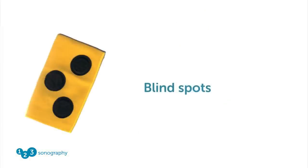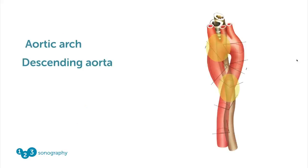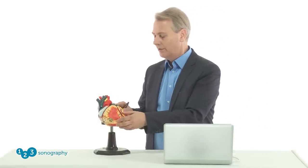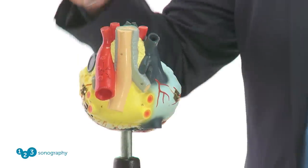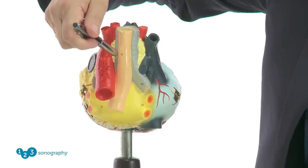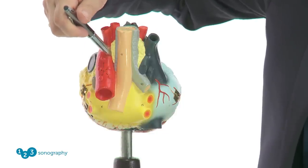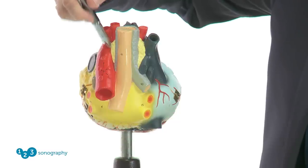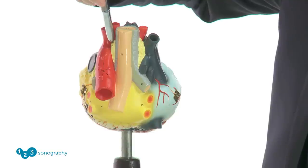TEE also has a few disadvantages — certain blind spots you have to know. One is a problem with the aorta: there is one area where it's difficult to see the descending aorta in the middle part of the chest. The other is the cranial portion of the ascending aorta and the aortic arch. The reason is that we have the bronchial tree lying between the esophagus and the ascending aorta and aortic arch, making this region very difficult to see.